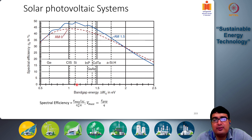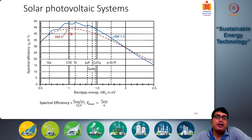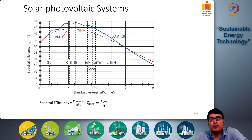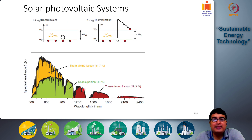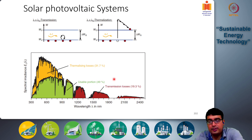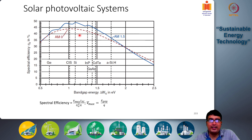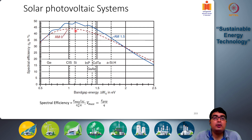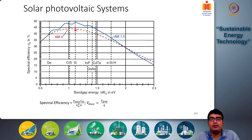For silicon at 1.1 electron volts band gap, you can see that the efficiency is at the highest point around 48 to 50 percent. This is the usable portion, which is about 49 percent for silicon; the rest are losses. For AM0 at the equator, it is somewhat lower, around 43 percent of the incident solar radiation that is absorbed.